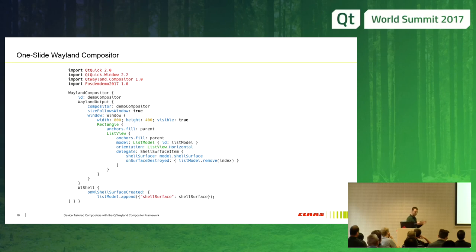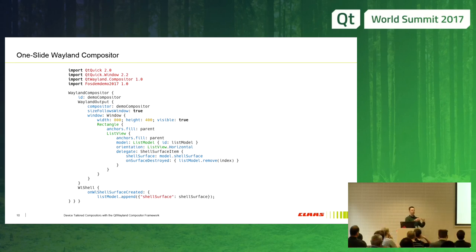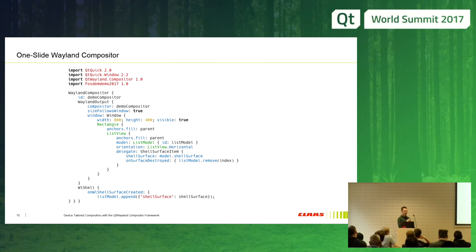That's a really simple example of how you can do it. I could actually also take the surfaces and put them into an additional list, since I can create a new Qt Quick surface and use the same shell surface for it. So I have two items using the same buffer at different points. You can have live previews if you put it into an additional list on the bottom where you have your navigation bar.